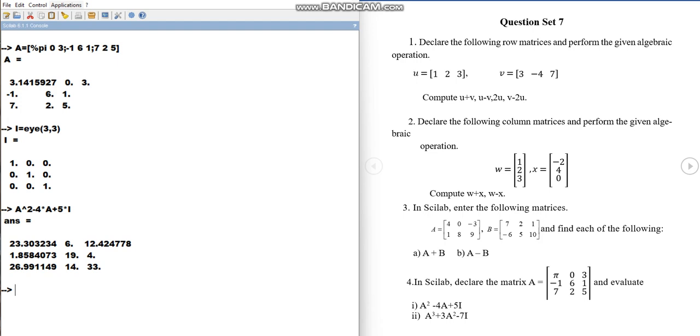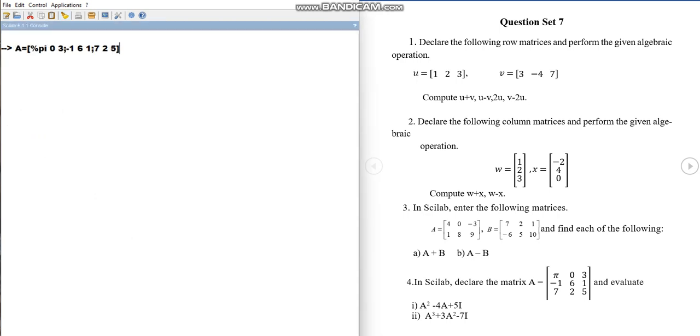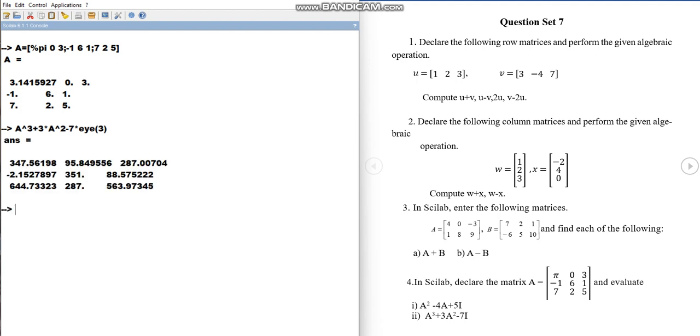Or what you can do is, you can directly use the I command in the question itself. Let me write my A matrix and if you want to find A cube plus 3A square, so what we can do, A cube, so it's A cap 3 plus 3 star A cap 2 minus 7I. So it's just minus 7 star, you can write the identity matrix command EYE 3. So it's identity matrix of order 3. Either you can write 3 by 3, 3 comma 3 or you can write 3. So this way, we can get the answer without declaring the identity matrix, we have directly used the command in the question itself.